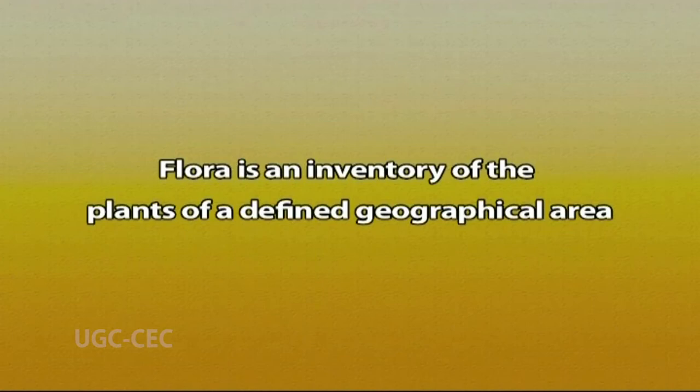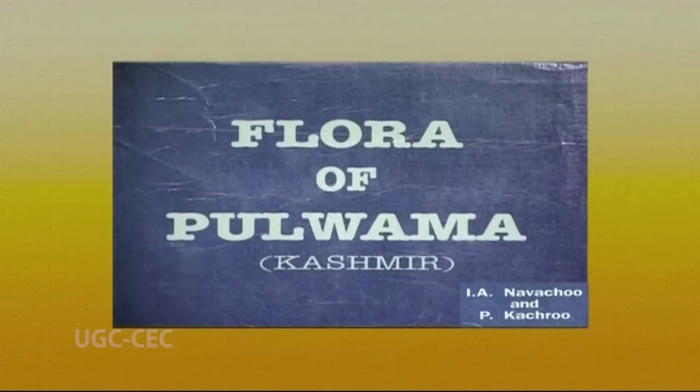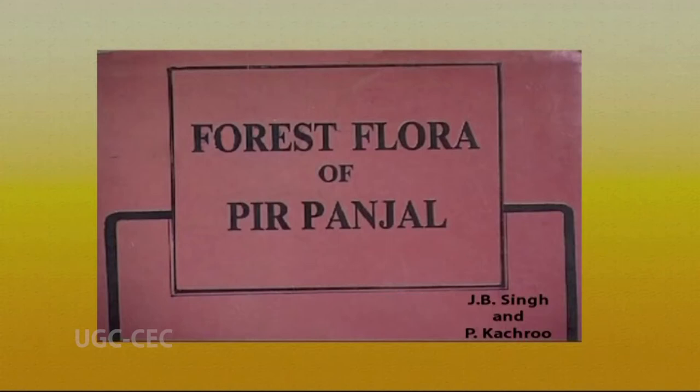The fourth source of literature is floras, monographs, and revisions. A flora is an inventory and documentation of the plants in a particular geographical area. Depending on scope and area, floras can be categorized as local flora, which covers a limited geographical area such as a district, city, valley, mountain range, or island. Examples of local floras are Flora of Pulwama, Flora of Pir Panjal Range, Flora of Upper Liddar Valley, and Flora of the Andamans.